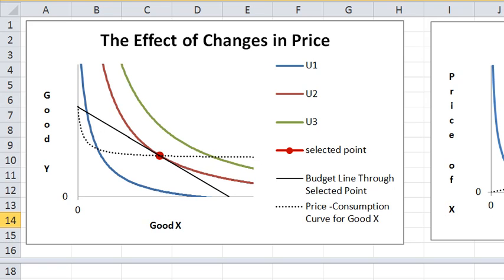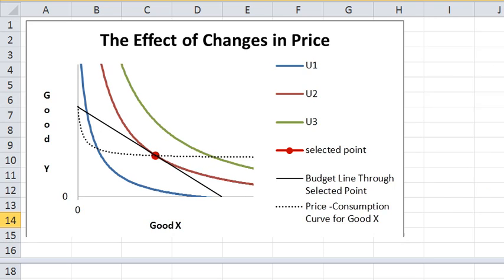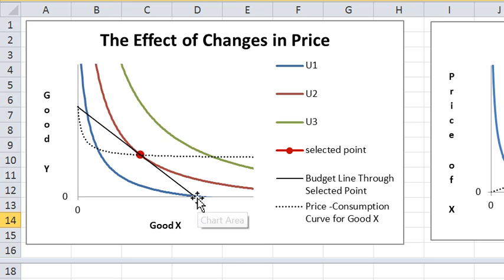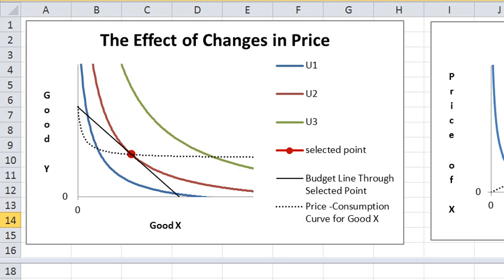And what I am going to do now is vary the price of X. Let's raise the price a little bit. Let's raise it a lot. That moves the intercept on this axis in. Notice that the choice point as I raise it stays on this dotted curve, which is the price consumption curve. So the price consumption curve shows the choice point as we vary the price of X. And there I am raising it. And now let's lower it back again.